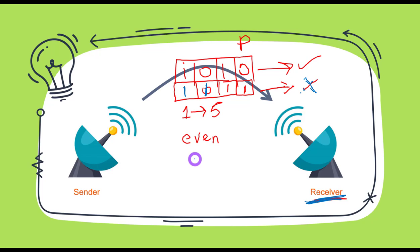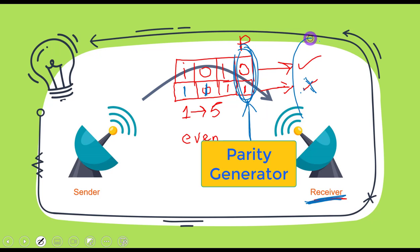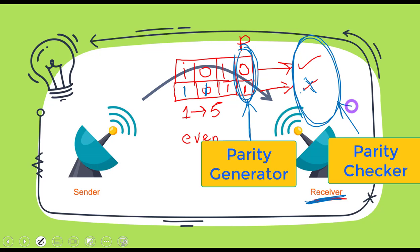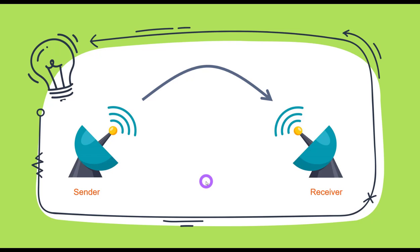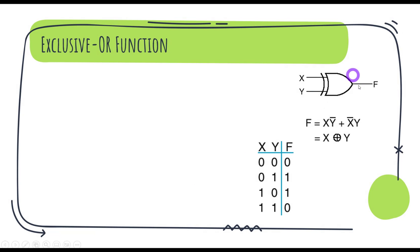Now let's see how to design the two circuits for parity generation — generating the parity bit — and the parity checker, which checks parity at the receiving end. Before moving towards designing these two circuits, let's quickly look at the exclusive-OR or XOR gate, because this gate will actually help us design these two circuits.